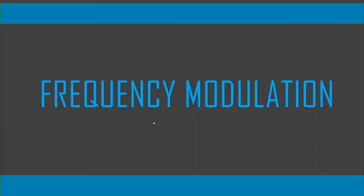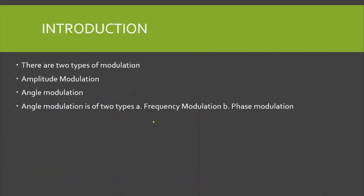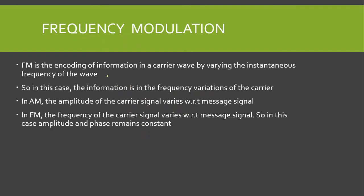In this lecture we are going to talk about frequency modulation. Broadly there are two types of modulation: amplitude modulation and angle modulation. Angle modulation is further divided into two types: frequency modulation and phase modulation, and angle modulation is non-linear modulation. Frequency modulation is the encoding of information in a carrier wave by varying the instantaneous frequency of the wave.